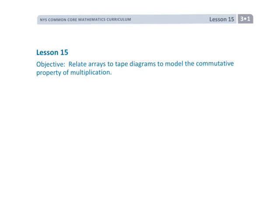This is Grade 3, Module 1, Lesson 15, where we're going to be relating the arrays that we've been drawing to tape diagrams — in particular to model the commutative property.